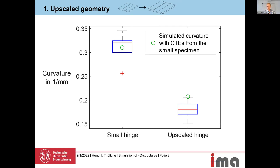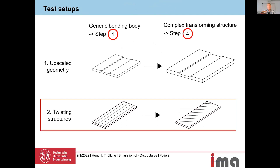For the upscale geometry, the simulated curvature shows a significant error. This error occurs when we upscale the geometry by 1.5, and we assume that upscaling the hinge even more would produce a larger and larger error. We therefore concluded that we cannot accept the hypothesis for upscale geometries.